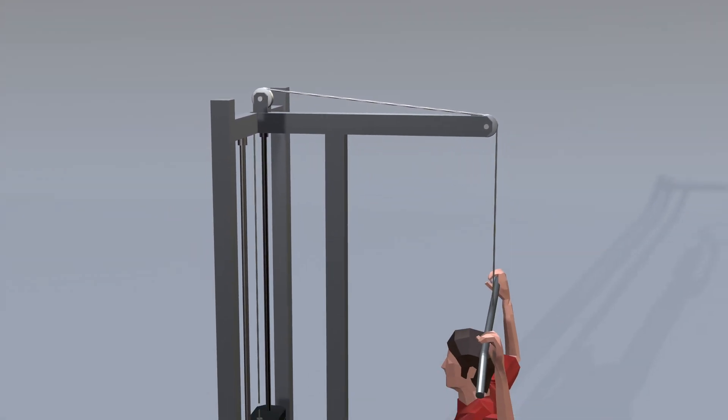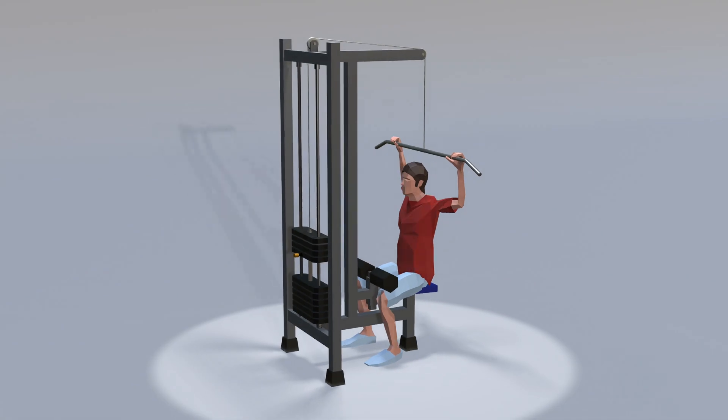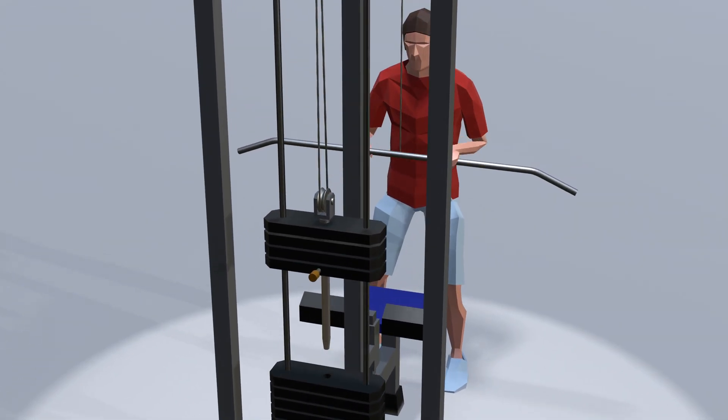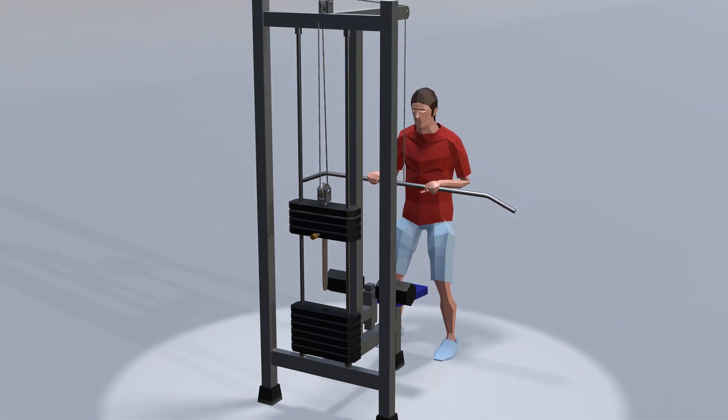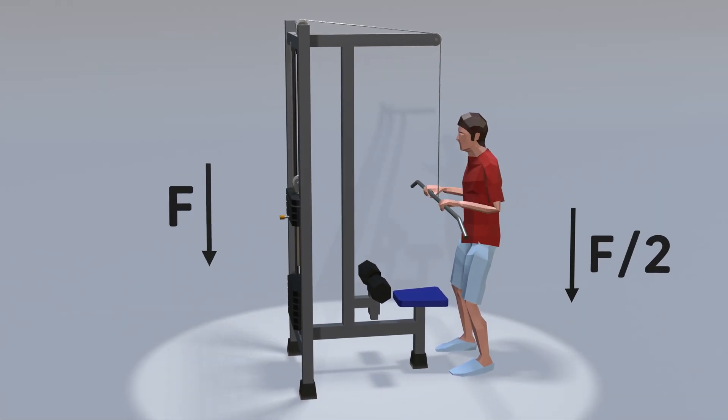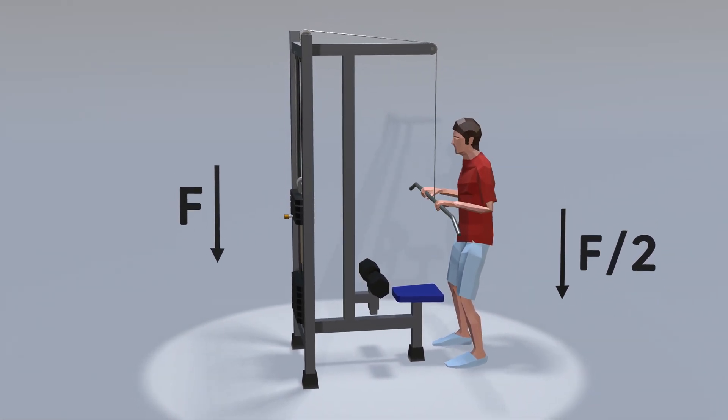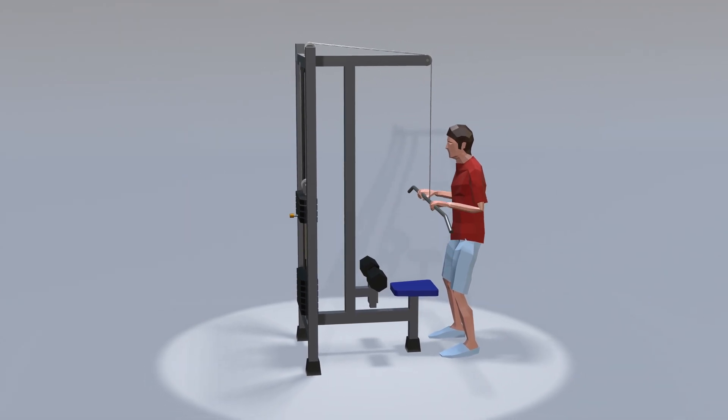If we slightly change the design of this exercise machine by adding one movable pulley, then to lift a load weighing 490 N, we will need to apply half the force. This way, we get a double mechanical advantage. But how is this possible?